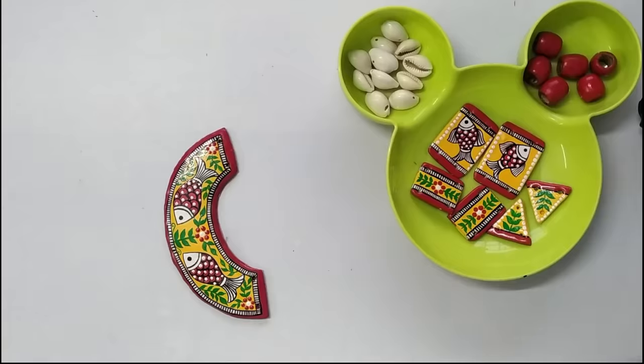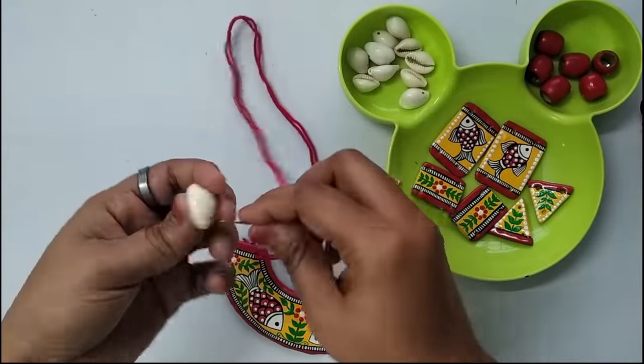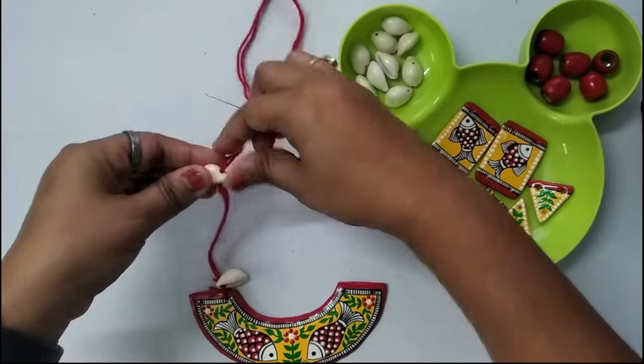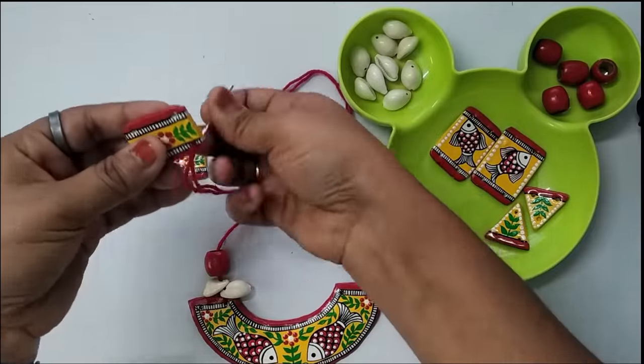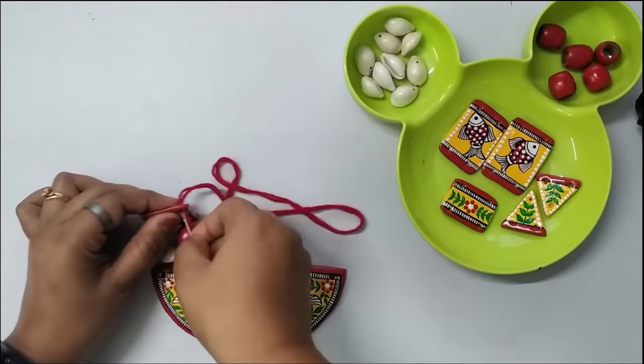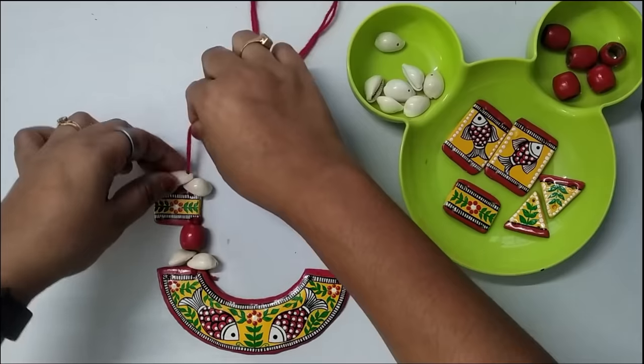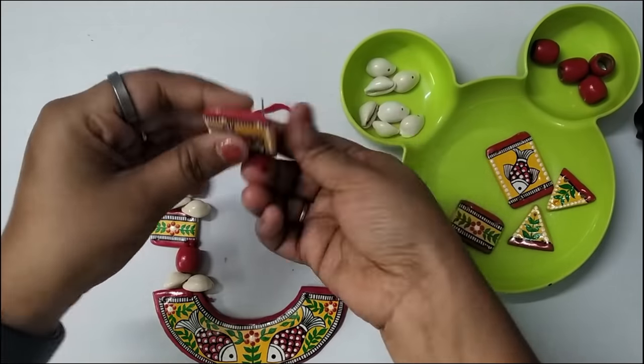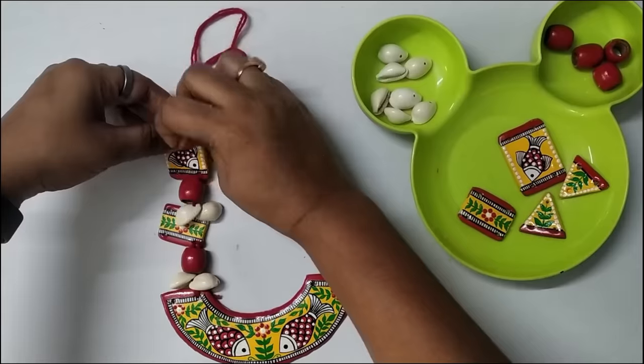Now it's time for assembling all the pieces together. Here I have taken one cotton thread with a needle. I'm adding two kauri shells and the wooden bead that I've painted, and then attaching another piece of clay jewelry. Again following the same process, adding two kauri shells, then a kauri shell, then a kauri bead and adding another piece of clay jewelry. You need to follow the same sequence.